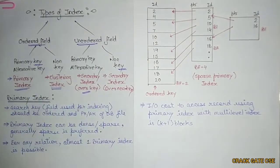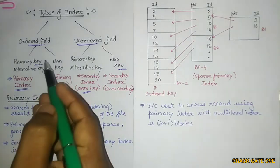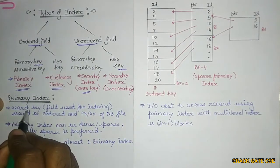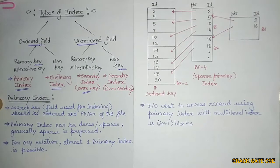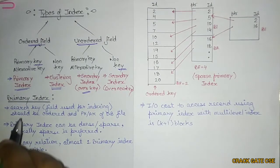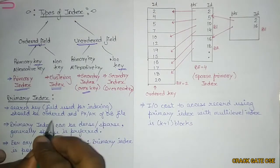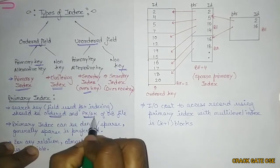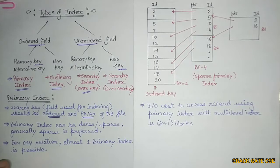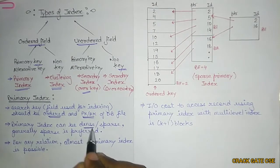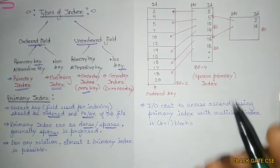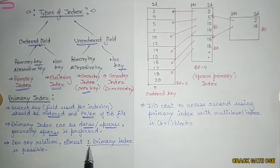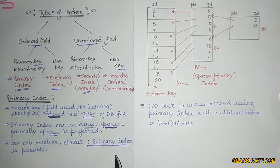We will discuss each of the four types one by one. In the primary index, the search key — whatever field we are considering for indexing — should be ordered and a primary or alternative key of the database file. Primary index can be dense or sparse, but sparse is generally preferred because of memory efficiency. For any relation, at most one primary index is possible.